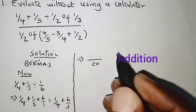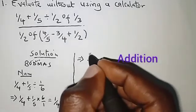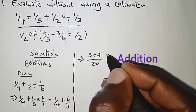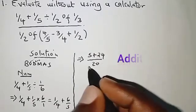So for the numerator we have 29 over 20.